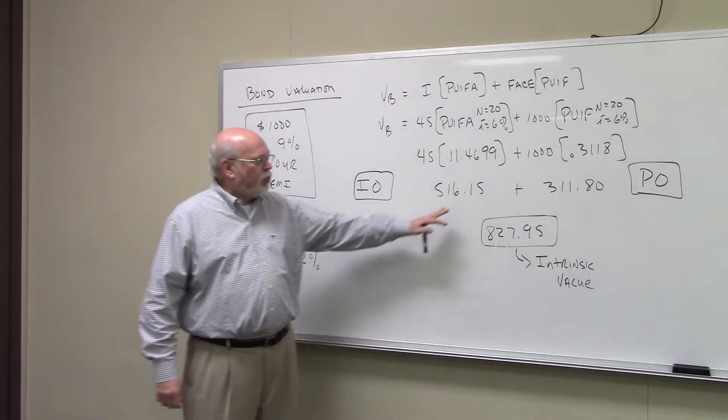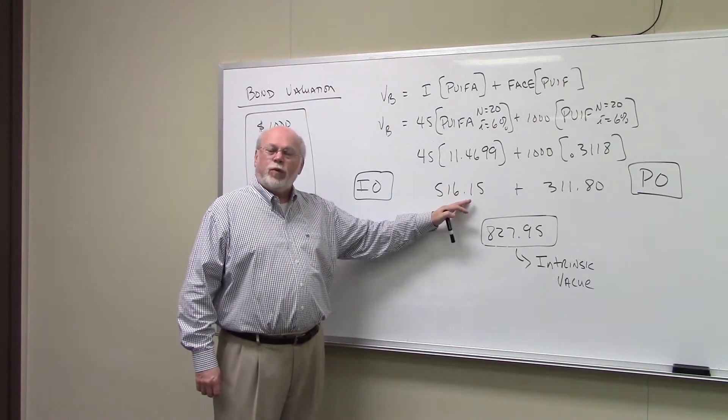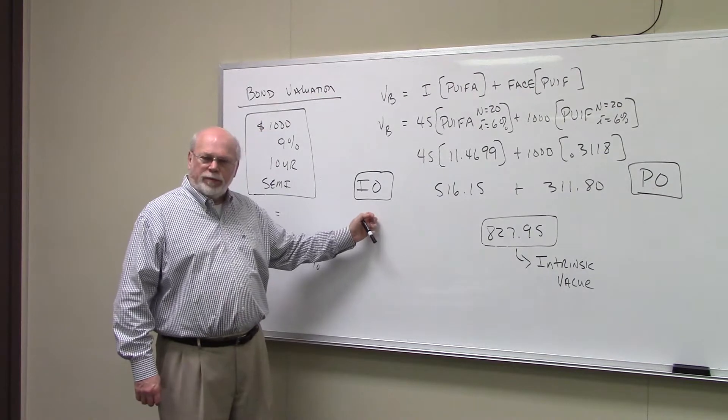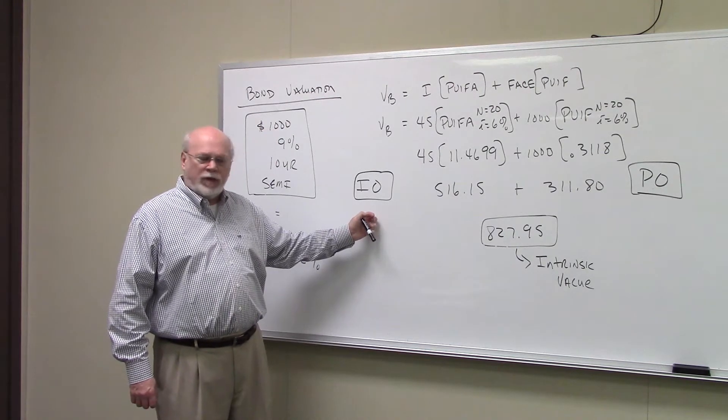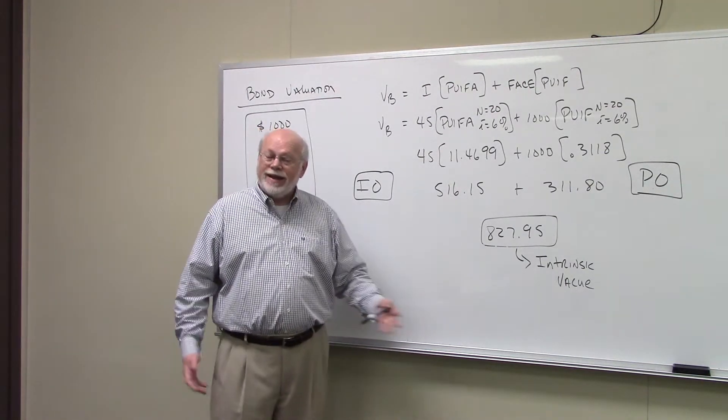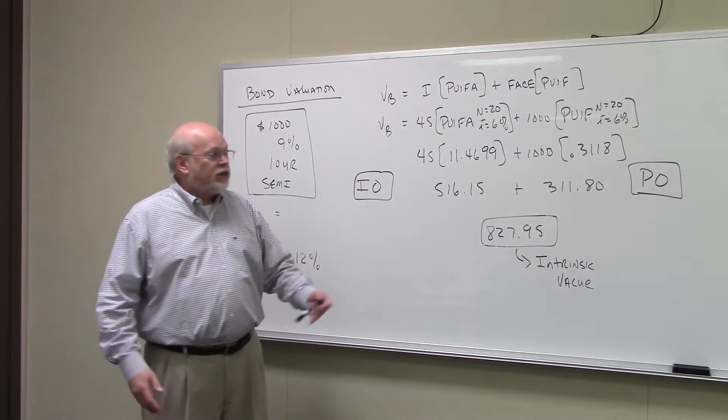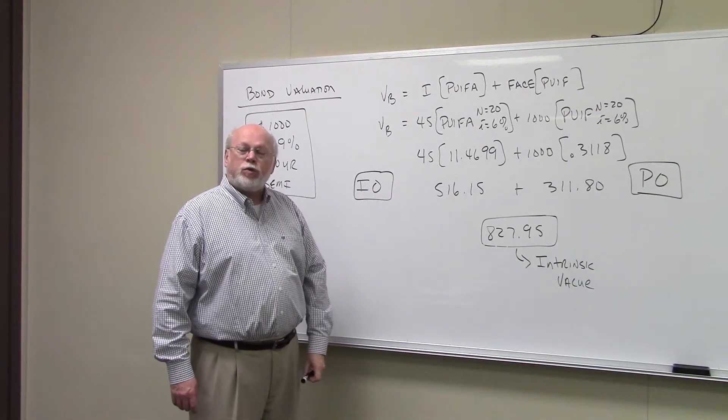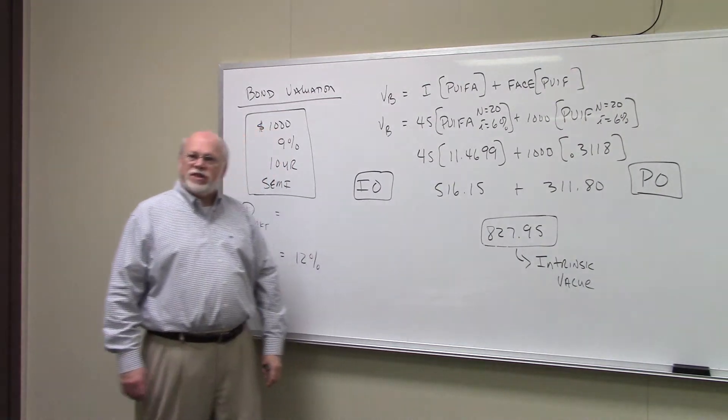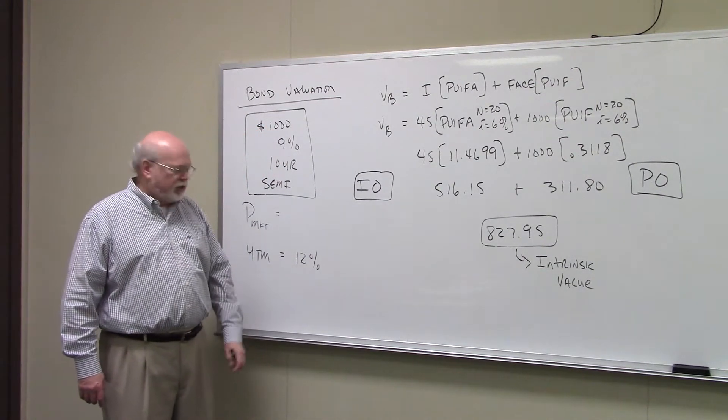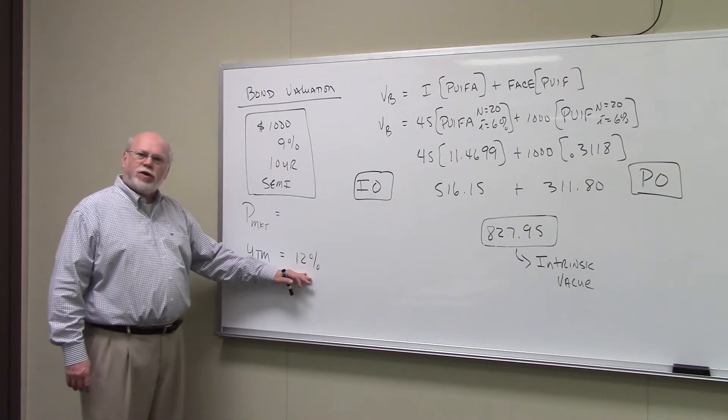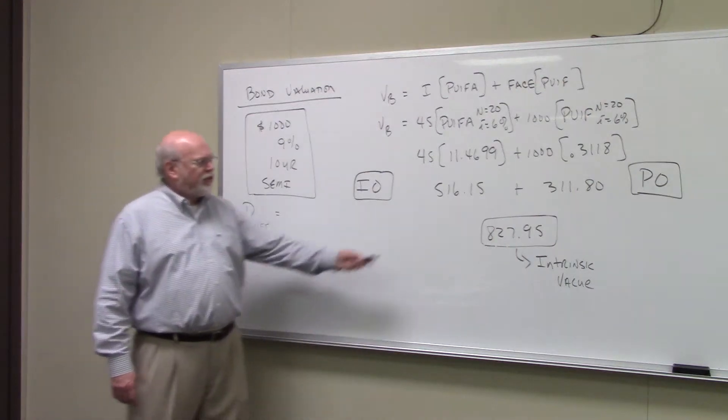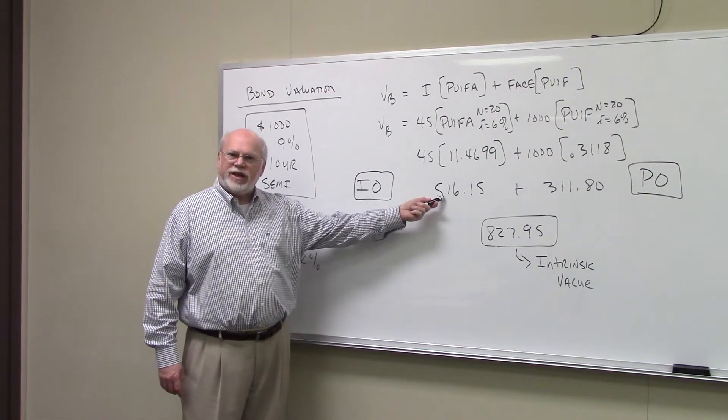And they'll sell to one investor what they call the I-O portion of the bond, the interest-only portion. And this would be for people who want income. In other words, the question becomes, how much would you pay to receive $45 every six months for 10 years if you require a return of 12% per year? Well, the answer is $516.15.